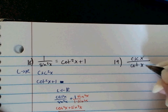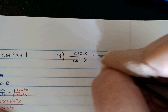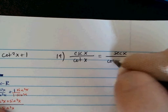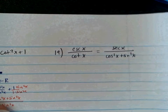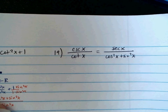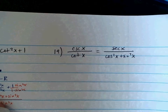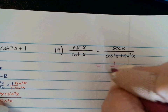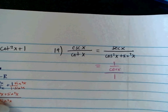Number 19 says cosecant divided by cotangent equals secant divided by cosine squared plus sine squared. There are some pretty obvious things here. The right-hand side should jump out as the denominator just being 1, since cosine squared plus sine squared equals 1. So I'll write that as 1 over cosine divided by 1. Secant is 1 over cosine, and cosine squared plus sine squared is 1.